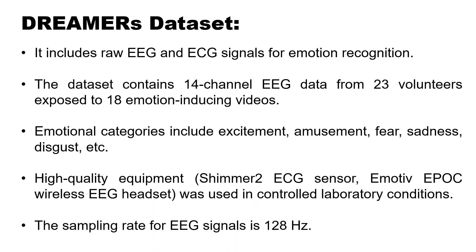The DIMAS dataset includes raw EEG and ECG signals for emotion recognition. It contains 14-channel EEG data from 23 volunteers exposed to 18 emotion-inducing videos. Emotional categories include excitement, amusement, fear, sadness, disgust, etc. High-quality equipment similar to an ECG sensor — an Emotiv Epoc wireless EEG headset — was used in controlled laboratory conditions. The sampling rate for EEG signals was 128 Hz.